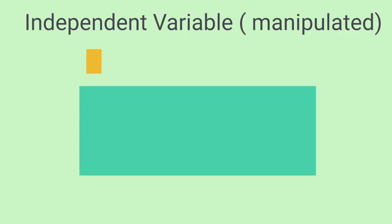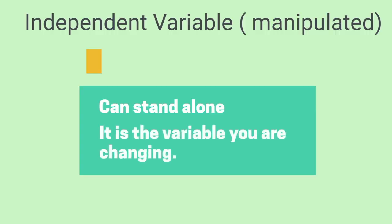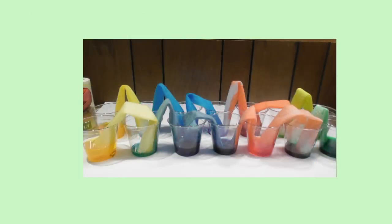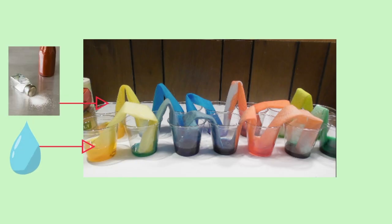So in summary, the independent variable is the variable that can stand alone. It is the variable that you are changing. In walking water, you change the different types of water, either fresh or salt water.